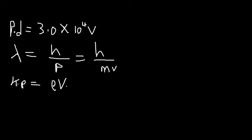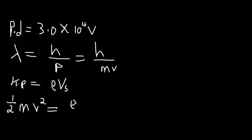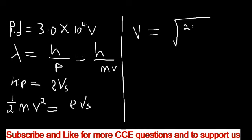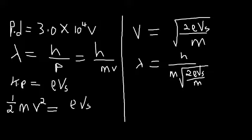We know that kinetic energy is one-half mv squared, equal to eVs. From here we make v the subject and substitute in our de Broglie wavelength. We get v equals the square root of 2eVs over m. Putting it in our de Broglie wavelength, we have h over m times the square root of 2eVs over m.